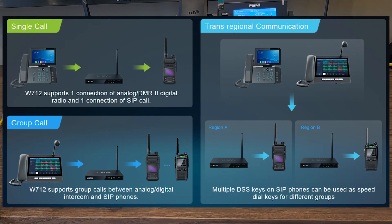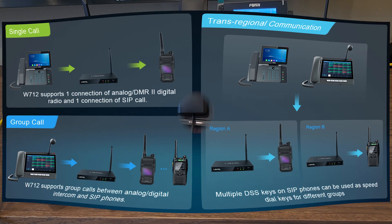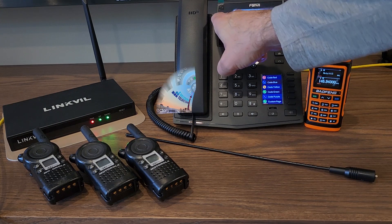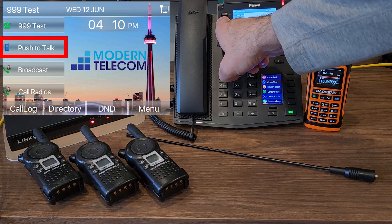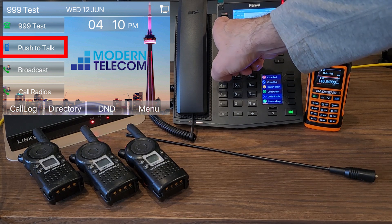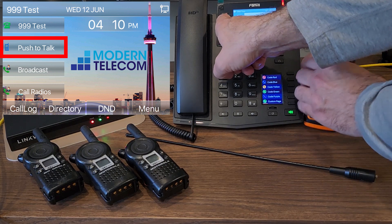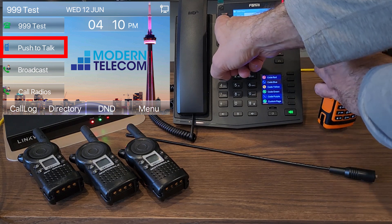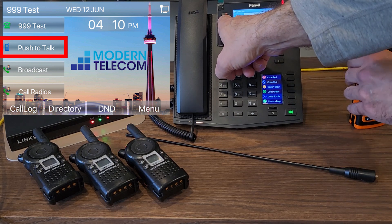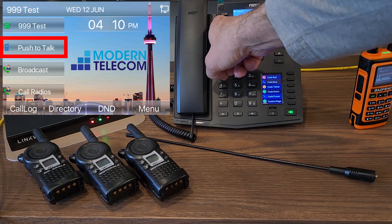Here are some of the practical ways in which we can communicate from VoIP to RoIP. From the VoIP phone you can communicate with radios by using the push to talk button here. As long as I'm holding this button down I'm now transmitting to the radios.